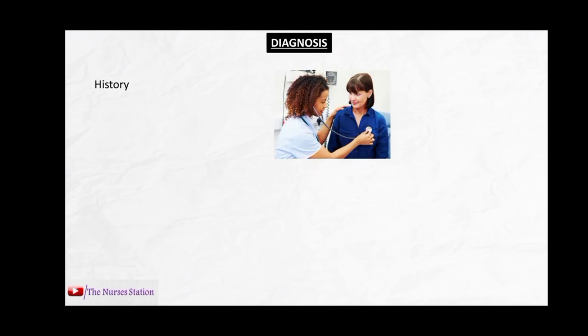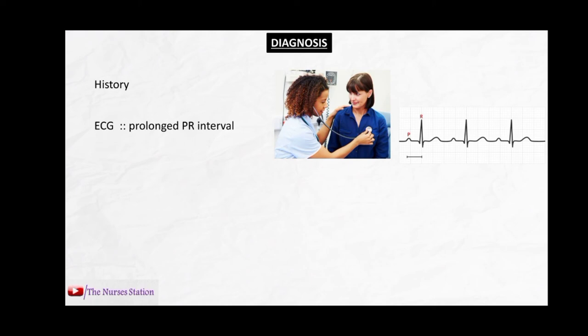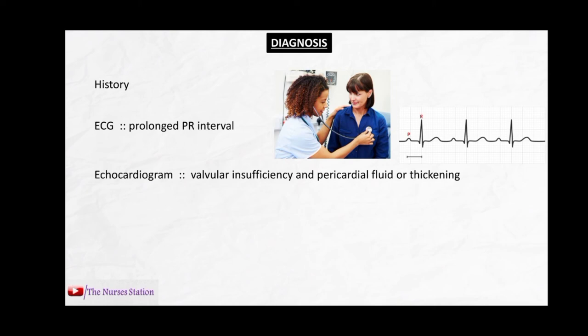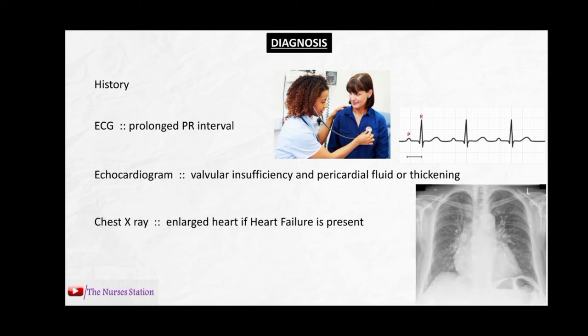For the diagnosis of rheumatic heart disease, first a complete history is obtained from the patient. ECG may show a prolonged PR interval. Echocardiogram may show valvular insufficiency — regurgitation — and pericardial fluid or thickening. Chest X-ray shows an enlarged heart shadow if heart failure is present due to rheumatic heart disease.